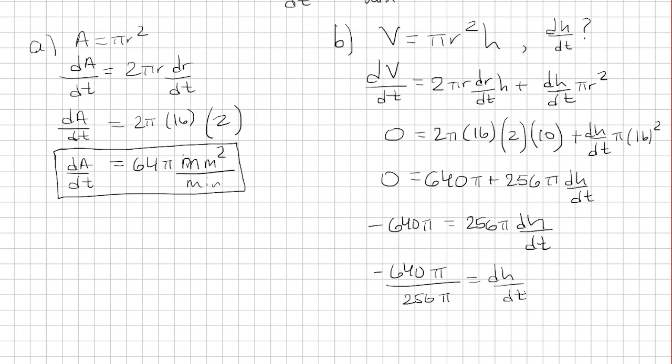So we know that this is going to be negative because the radius is increasing. So there was an inverse relationship there. And now it's just a matter of simplifying this. So π's are going to cancel. And then you're going to have 640 divided by 256, which is negative 5 halves.